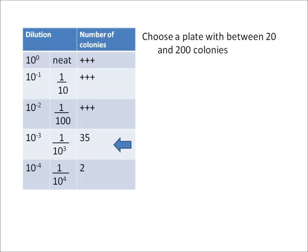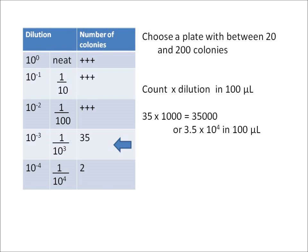But on my 10 to the minus 2 plate, I've just written +++, indicating that there's a lot of growth there. So if we multiply the count by the dilution, that'll tell us how many there were in the original 100 microliter sample. So 35 times our dilution, 1000, equals 35,000 - and we can write that more neatly as 3.5 times 10 to the 4 in our 100 microliter sample.